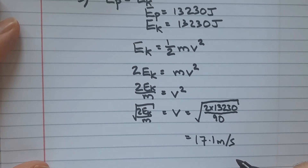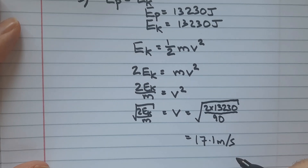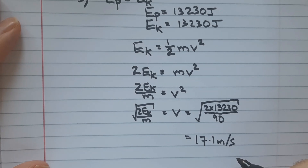That is the maximum speed the miner could reach at the bottom, where we've assumed all the gravitational potential energy turns into kinetic energy. In reality, because the miner is moving down a slide, there is air resistance and friction. So not all of the gravitational potential energy will turn into kinetic energy — some will transfer to the thermal energy of the slide and the surroundings.